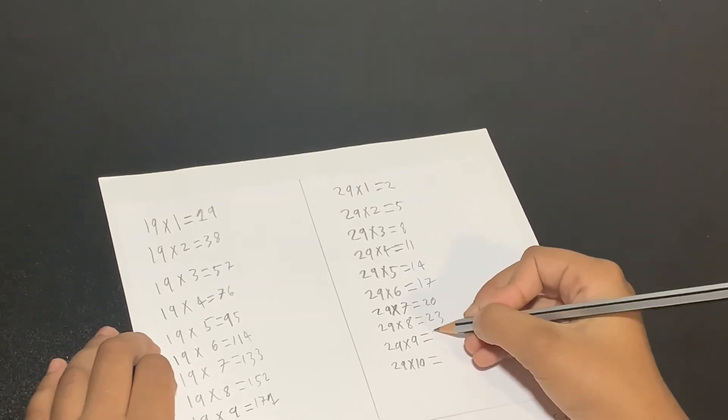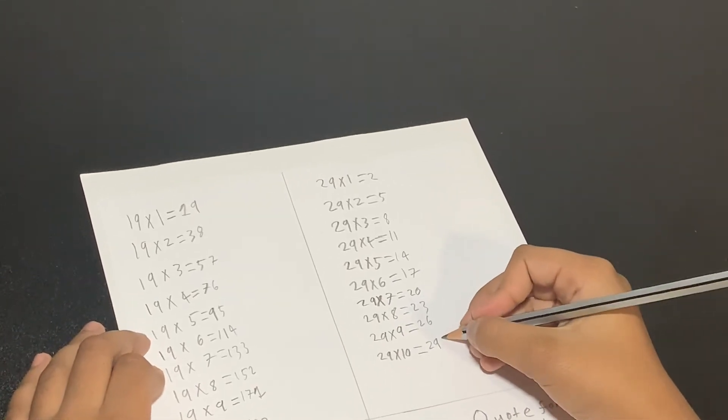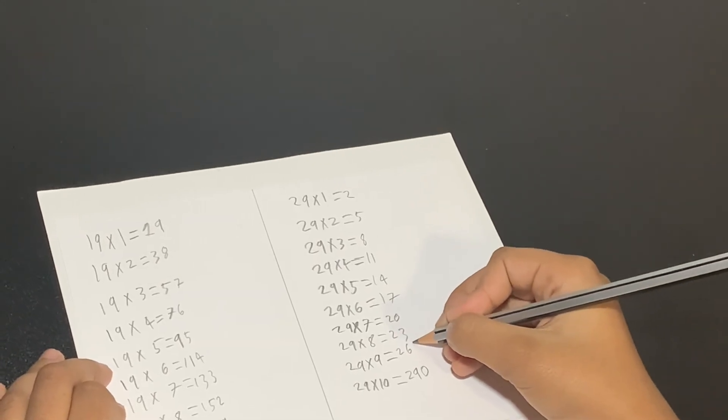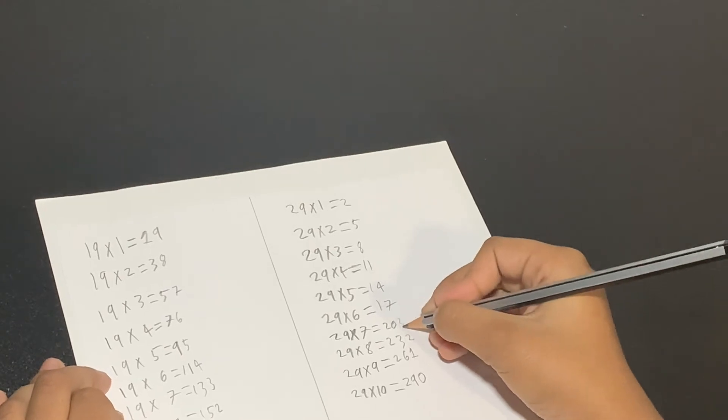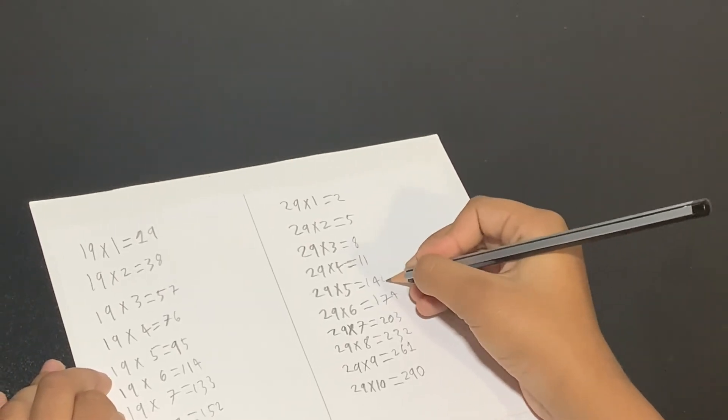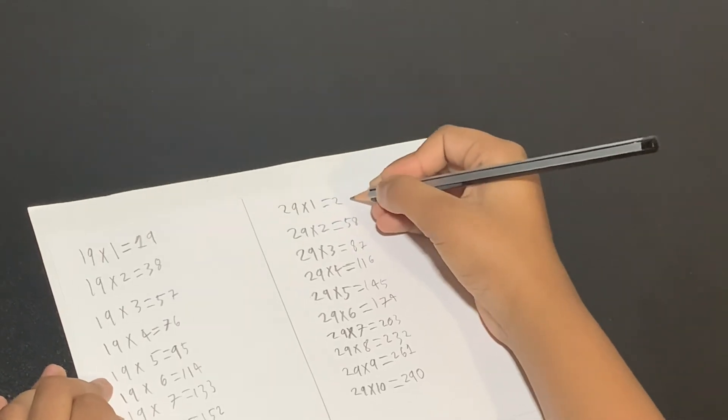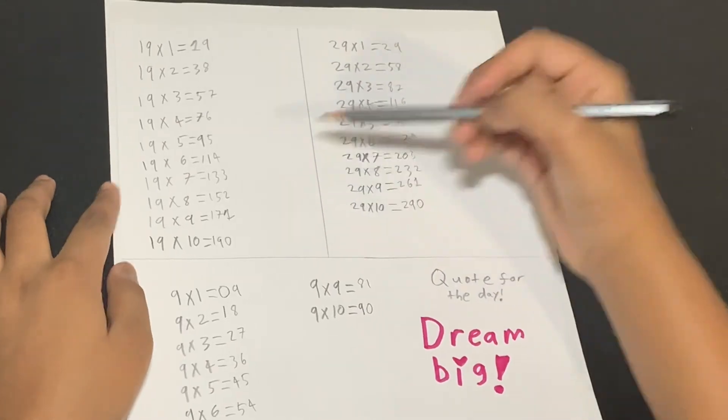Then we have to go 0 and then we do 1, 2, 3, 4, 5, 6, 7, 8, 9. There we have it, all our tables: 19, 29, and 9.